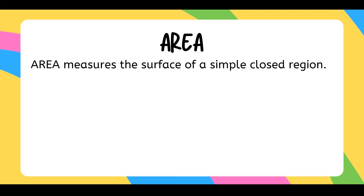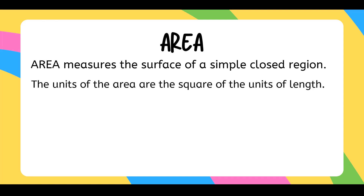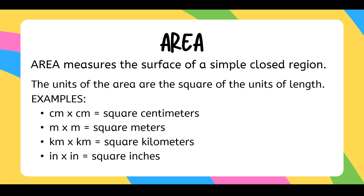Area measures the surface of a simple closed region. The units of the area are the square of the units of the length. For example, centimeter multiplied by centimeter will be square centimeters, meter by meter will be square meters, kilometer by kilometer will be square kilometers, and inches by inches will be square inches. So all of the units of measurement used in the area are in square units.